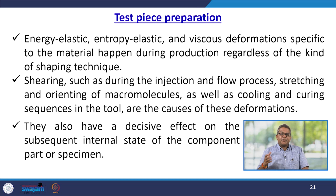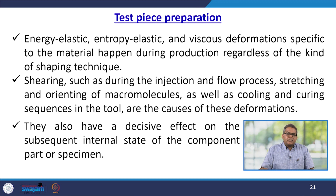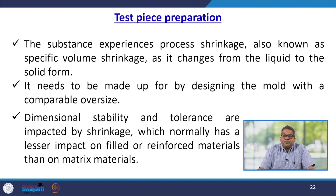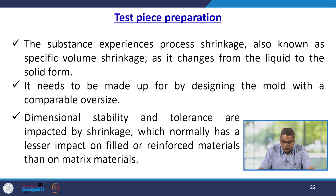Shearing during injection and flow processes, stretching and orienting of macromolecules, and the cooling and curing sequence in the tool are causes of deformation that have a decisive effect on the subsequent internal state of the component, part, or specimen. The substance experiences process shrinkage — also known as specific volume shrinkage — as it changes from liquid to solid form. Shrinkage normally has a lesser impact on filled or reinforced material than on the matrix material, and the dimensional stability and tolerance are impacted by it.